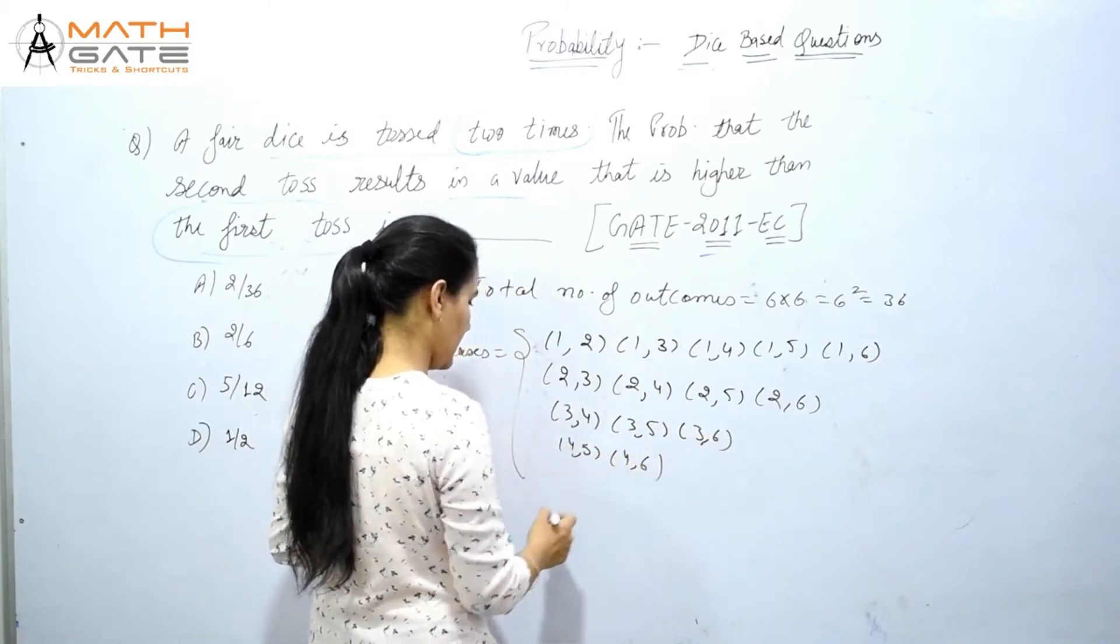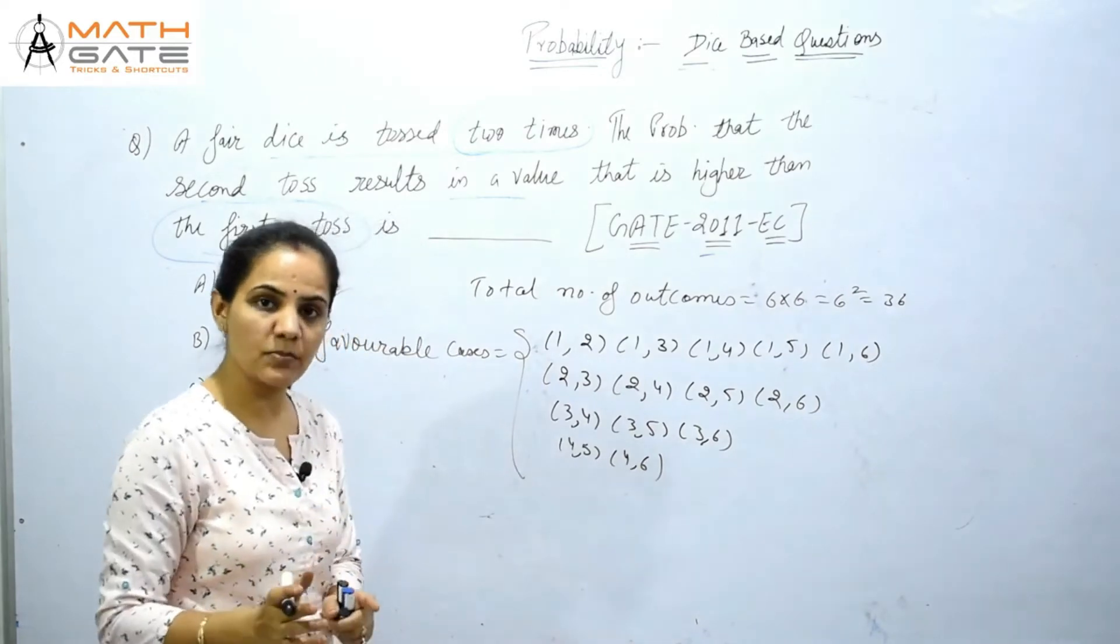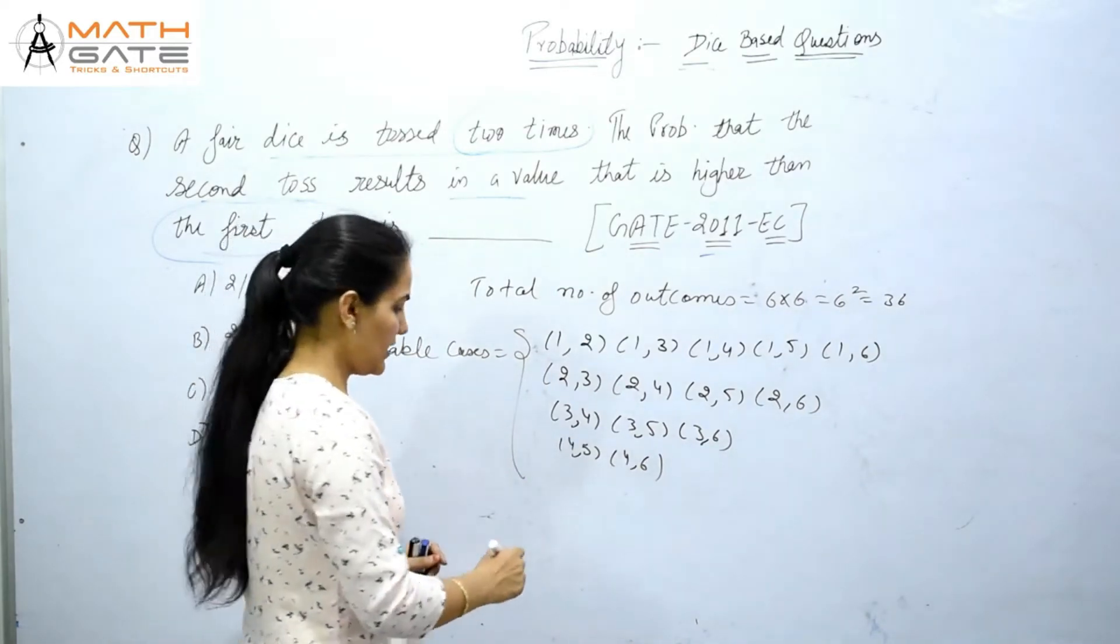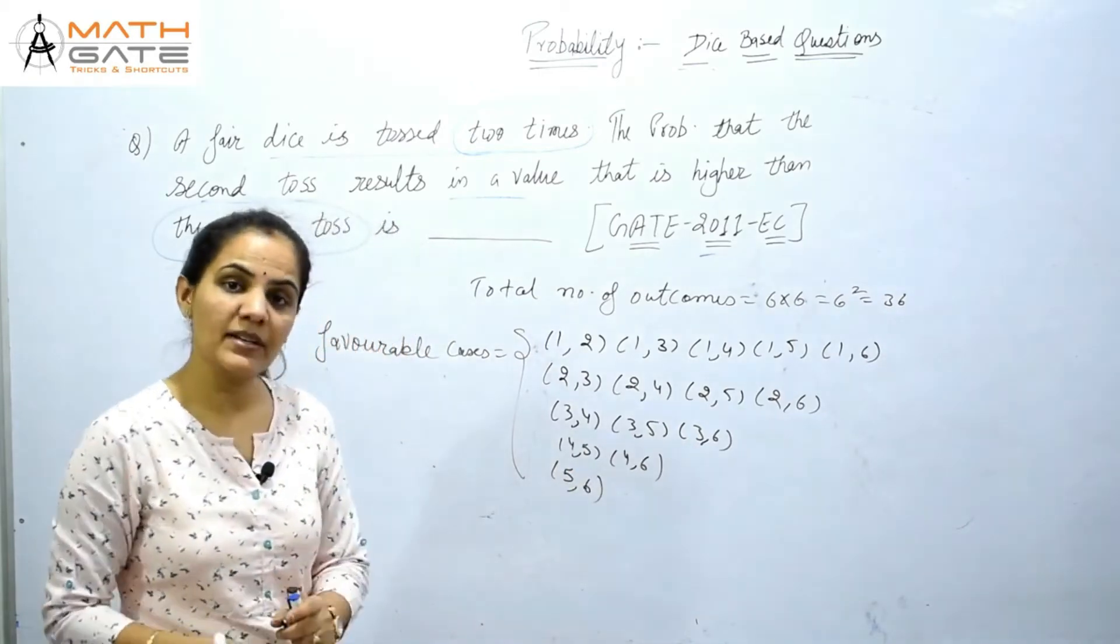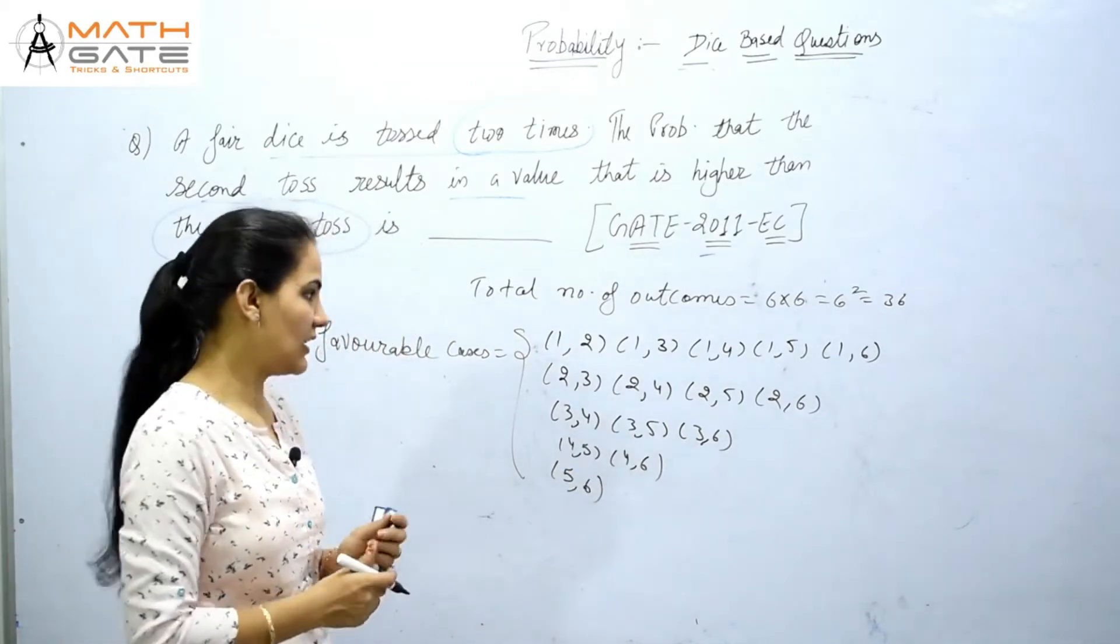We can also write four-five, four-six. In this case also, the second toss value is higher than the first. And lastly, we can have five-six. In this case also, the second value is higher than the first.